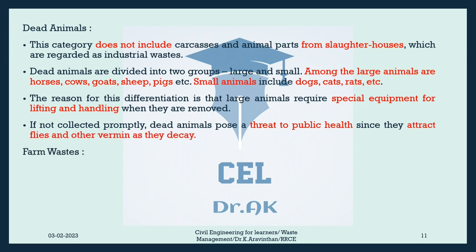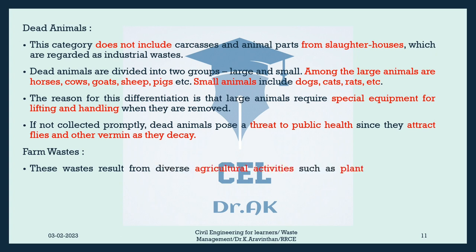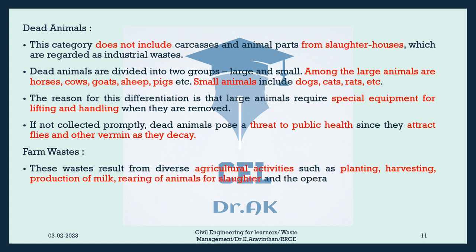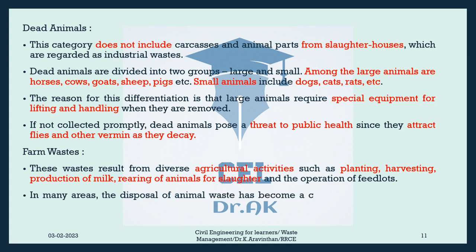Farm Wastes: These wastes result from diverse agricultural activities such as planting, harvesting, production of milk, rearing of animals for slaughter, and the operation of feedlots. In many areas, the disposal of animal waste has become a critical problem, especially from feedlots, poultry farms and dairies.